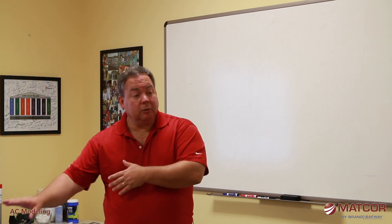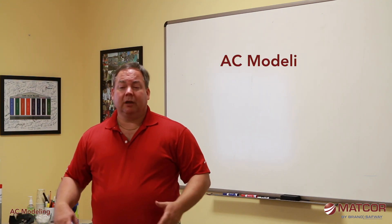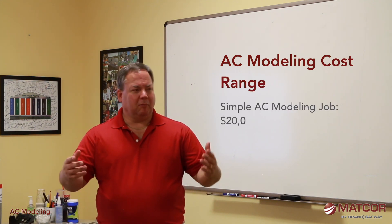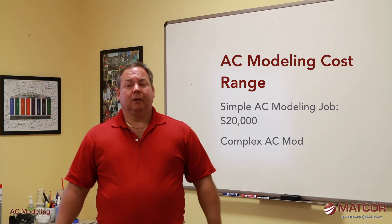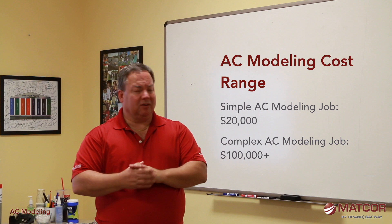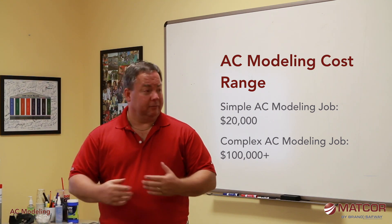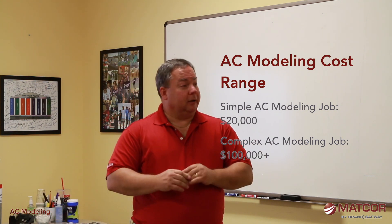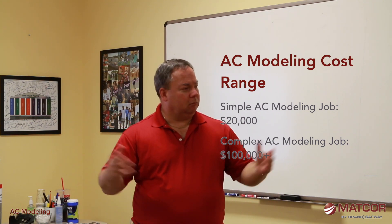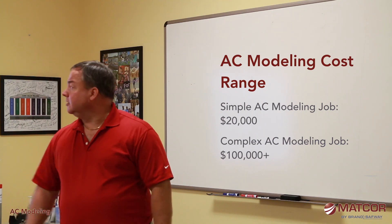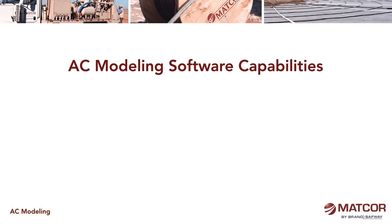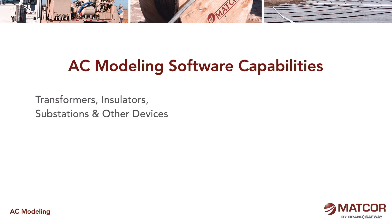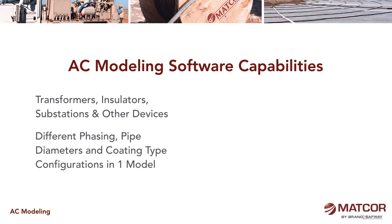For a relatively simple co-location, you may not need full modeling. Modeling typically costs anywhere from $20,000 for a simple job to well over $100,000 for a large job due to extensive data collection and modeling effort. In some cases it may be simpler to just put $10,000 worth of grounding in and over-design the solution, because it's not worth spending $20,000 on a model. In other cases, modeling is an absolute necessity.